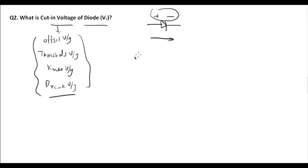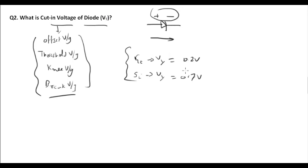For a germanium diode, the cut-in voltage Vγ = 0.2 V. For a silicon diode, Vγ = 0.7 V. Please remember these values for numericals, as they are generally not given in questions.